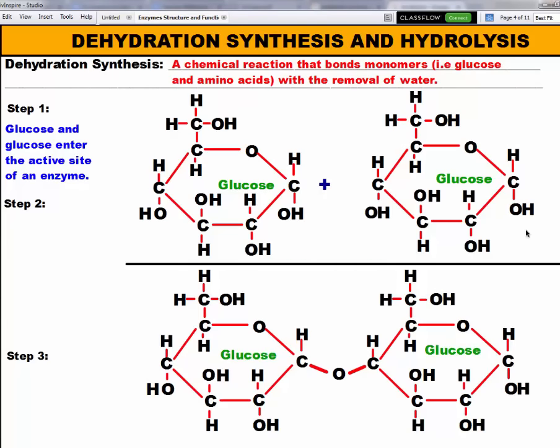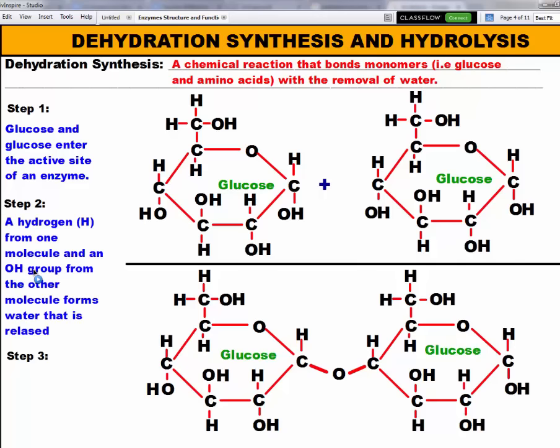Once you have these molecules in the active site of the enzyme, then we can move on to step two. Step two basically says a hydrogen from one glucose molecule and an OH group from another glucose molecule will break off and then bond together and form water. So this is what that looks like.